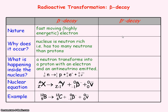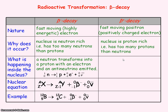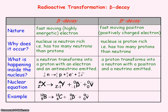For beta positive decay, a beta positive particle is a fast-moving, highly energetic positron — a positively charged electron, also called the anti-electron. Beta positive decay occurs when the nucleus is proton-rich: it has too many protons relative to neutrons to be stable. During beta positive decay, a proton inside the nucleus changes into a neutron, a positron (the beta positive particle), and a neutrino, and the positron and neutrino are emitted out of the nucleus.